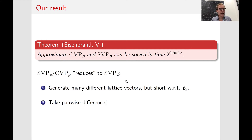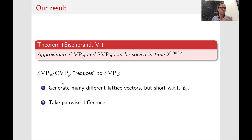More precisely, we reduce to the task of sampling many different lattice vectors that are short with respect to L2 — which is incidentally what this algorithm does. We need this algorithm, which is based on randomized sieving, and we need to tweak it a little bit for our purpose. I'll first remind you how this algorithm works, and then sketch the main idea for SVP and CVP with respect to any LP norm running in this time.